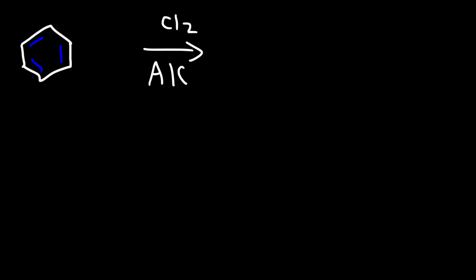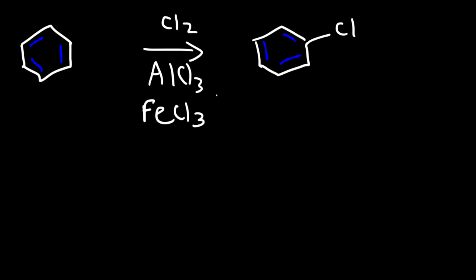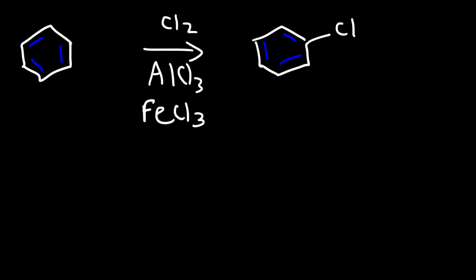Now let's move on to the chlorination of benzene. If we react benzene with chlorine gas and AlCl3, aluminum chloride, this will generate chlorobenzene. By the way, in addition to using AlCl3, you could also use FeCl3 — both of these Lewis acid catalysts can work in this reaction. For this example, I'm going to use AlCl3.